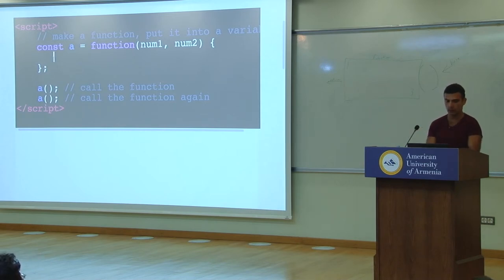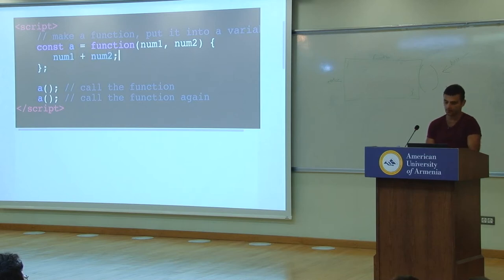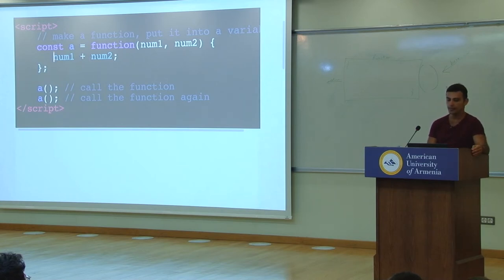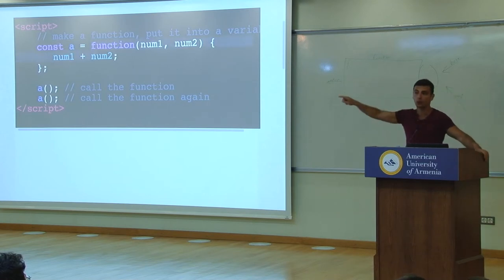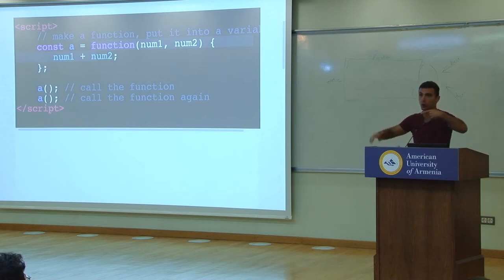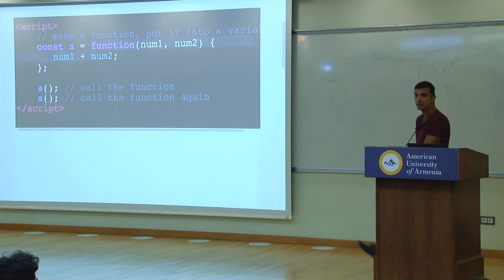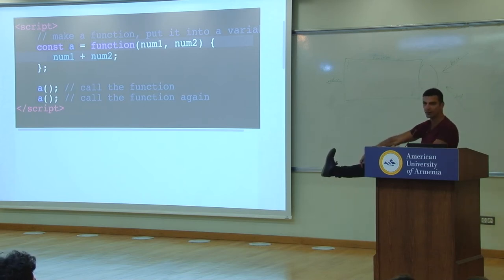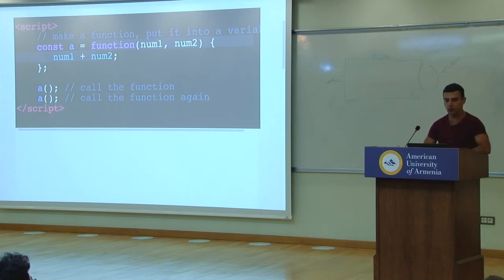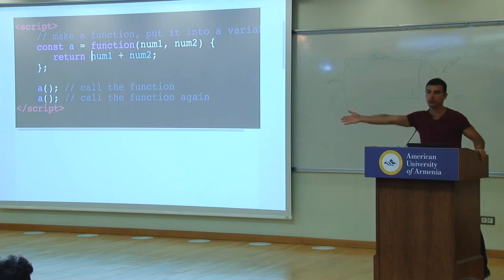What would be the code for adding numbers? It's num1 plus num2 — that will add them together. But what we want is this function to push a value, a result, from the other hole. Once we have the inputs coming in through this hole, we want the result to go out the other side. The way to push something out of the other side is with return. So we are returning num1 plus num2.